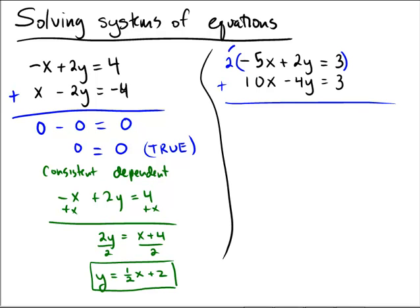In the first case we have 2 multiplied by negative 5 which is negative 10, and if we add that to 10 we're going to get 0 copies of x. 2 times 2 is 4 and 4 minus 4 is going to be 0 so we've got 0 copies of y. 2 times 3 is 6 and 6 plus 3 is 9.